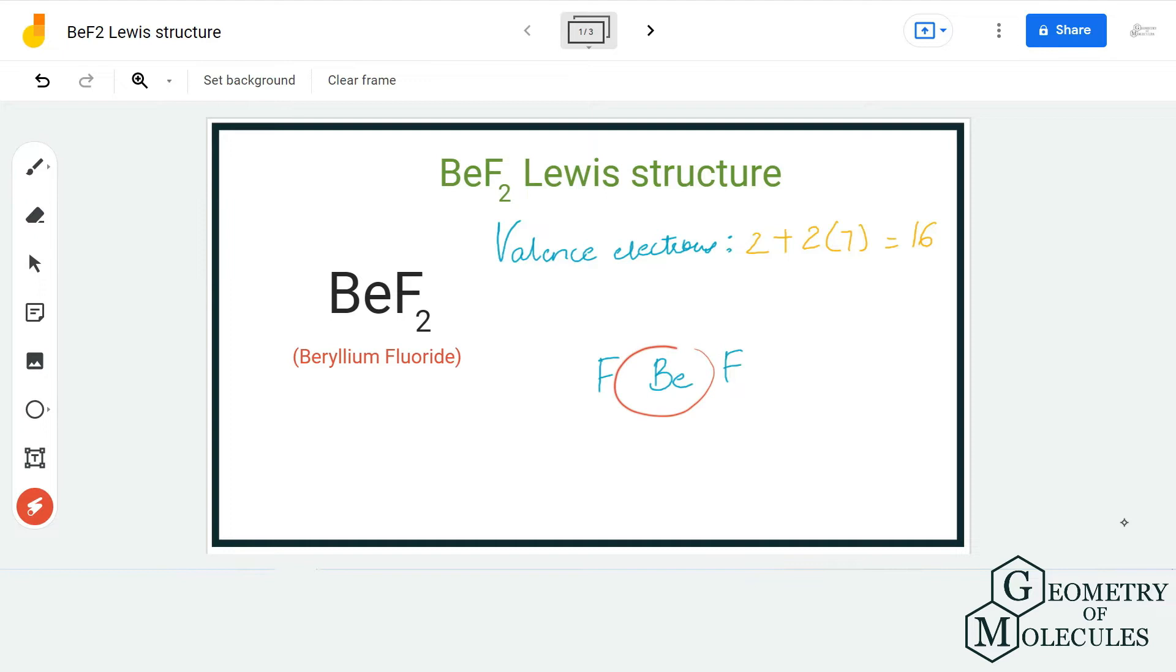I'm going to place the beryllium atom in the center and both fluorine atoms will be placed around it like this. Now to show a bond, I am going to place two valence electrons between both the fluorine and beryllium atoms.